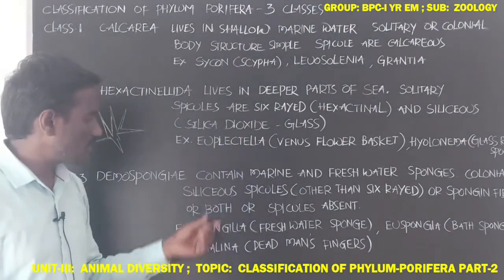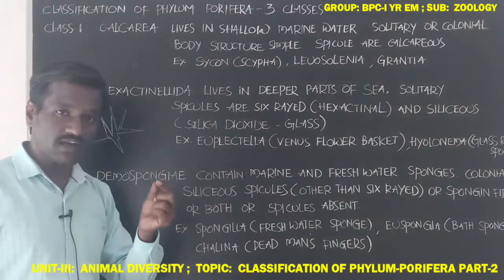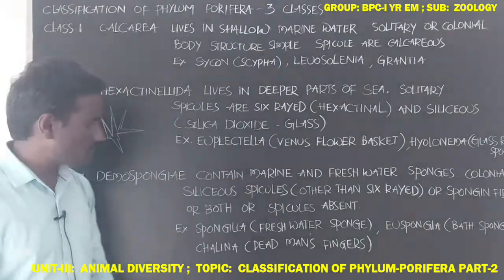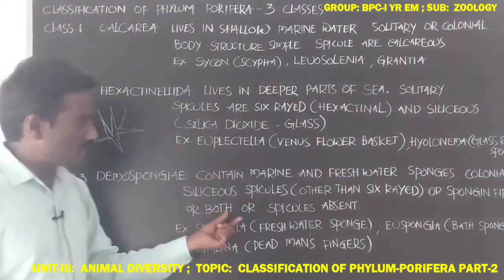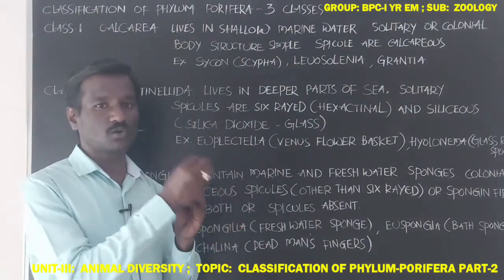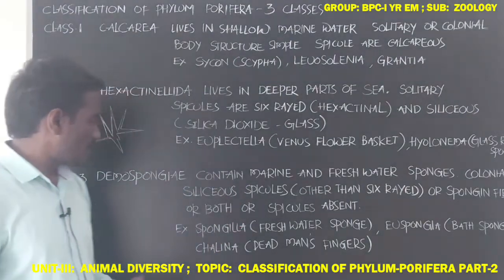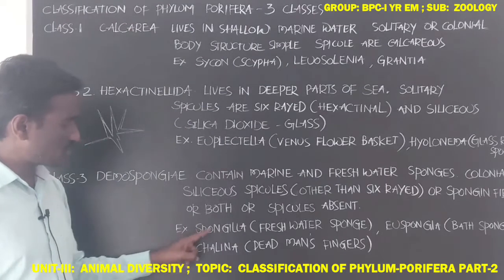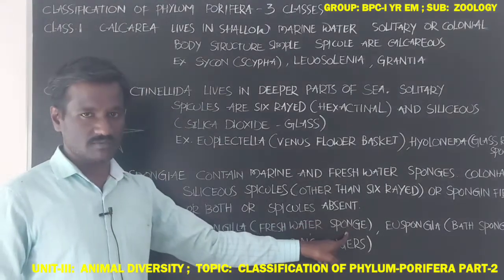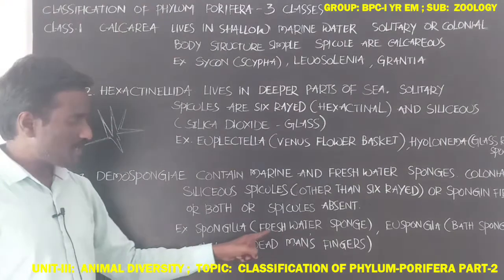In Demospongiae, spicules can also be made of spongin fibers. Some sponges have both types of spicules — siliceous and spongin — while in some sponges spicules are totally absent.